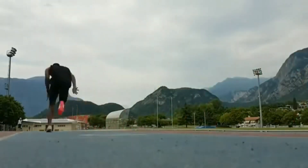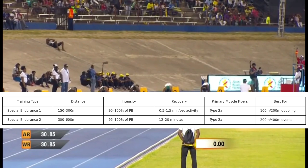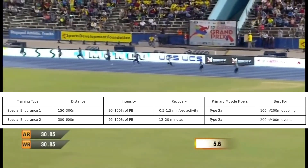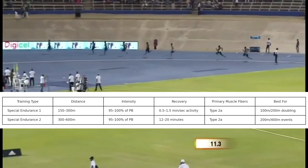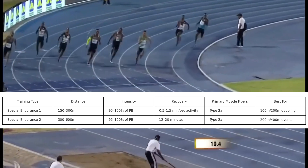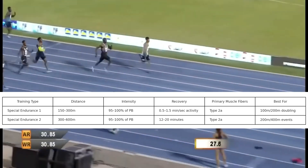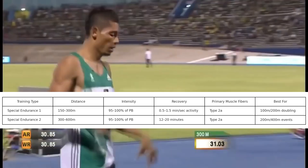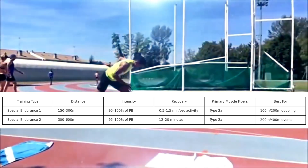Special endurance reps are performed at 150 to 300 meters and involve the same concept — challenging the muscle fibers to maintain high outputs even after fatigue onset. These distances are run at 95 to 100 percent of your personal best and require 0.5 to 1.5 minutes of rest per second of activity. This form of training is important for sprinters looking to double in the 100 and 200 meters. Special endurance 2 covers distances between 300 and 600 meters, typically used by 200 and 400 meter sprinters, with recovery times usually between 12 and 20 minutes. These sprints teach the athlete to maintain good technique and run through the line at the end of a 200 or 400 meter race. 100 meter sprinters wouldn't really benefit too much from this form of endurance training.